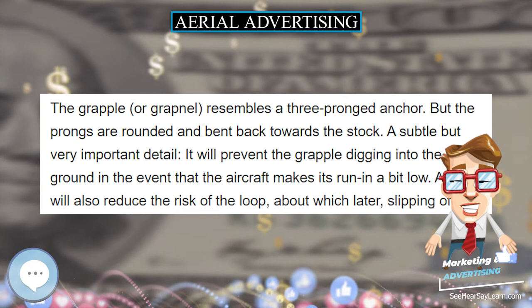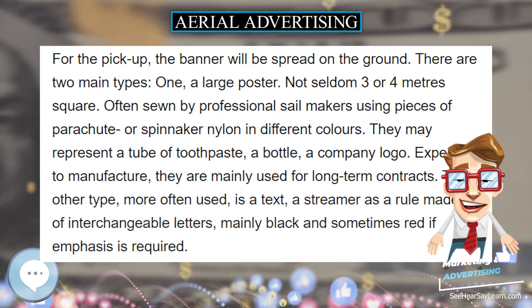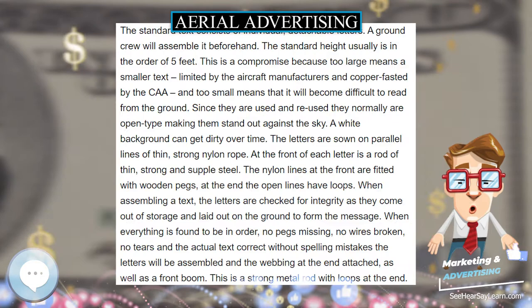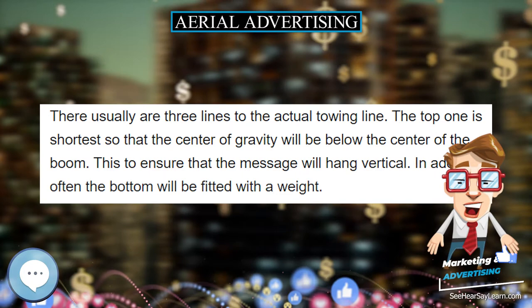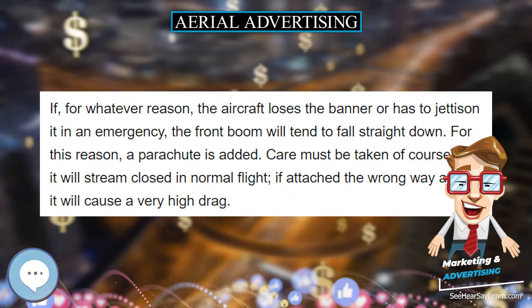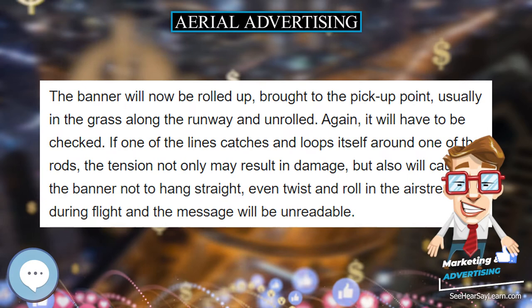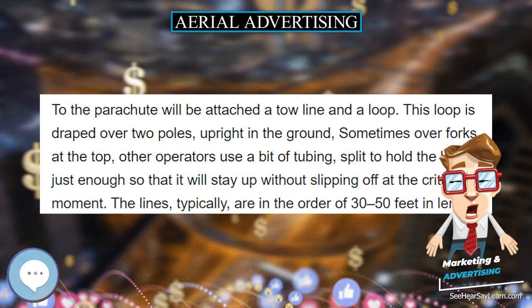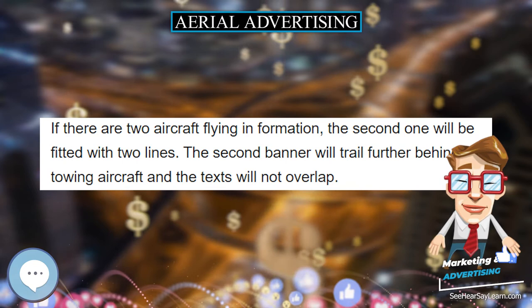For the pickup, the banner will be spread on the ground. There are two main types: one is a large poster, not seldom 3 or 4 meters square, often sewn by professional sail makers using pieces of parachute or spinnaker nylon in different colors, representing a tube of toothpaste, a bottle, or a company logo. Expensive to manufacture, they are mainly used for long-term contracts. The other type, more often used, is a text streamer made up of interchangeable letters, mainly black and sometimes red if emphasis is required.